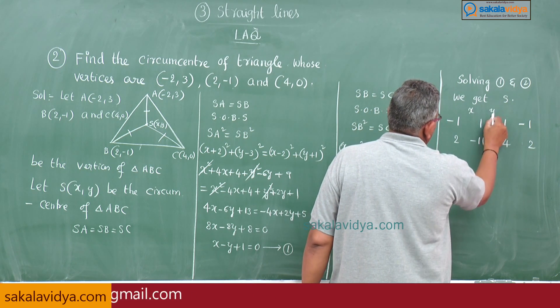What is the next step? Yes, we have to solve 1 and 2 for circumcenter S(x, y) values. Solving 1 and 2 we get circumcenter S. From first equation: 1, -1, 1. From second equation: 4, 2, -11. So x, y, 1.